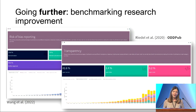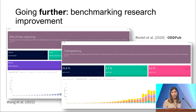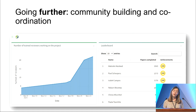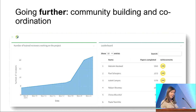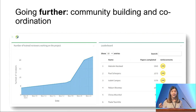Going further, there are three extra things SOLS can do that we hadn't originally intended. First, they can help benchmark research improvement: because we look at things like risk of bias reporting and transparency, we're starting to see trends over time and get interesting data about that. Second, they can be used for community building and coordination. As I mentioned, the SPRINT project — we actually tracked progress of that project on the SOLS application and had a leaderboard. Going forward, I'd like to think about how this could be used for building communities around systematic review in given research areas.